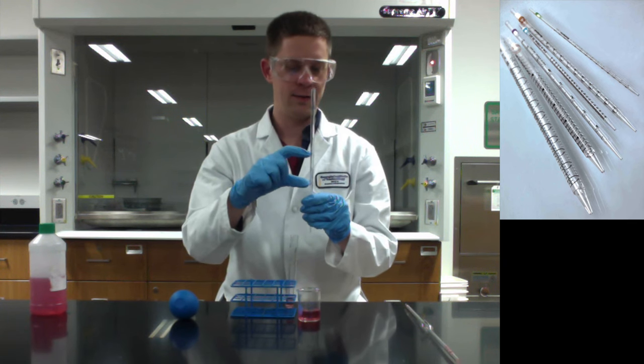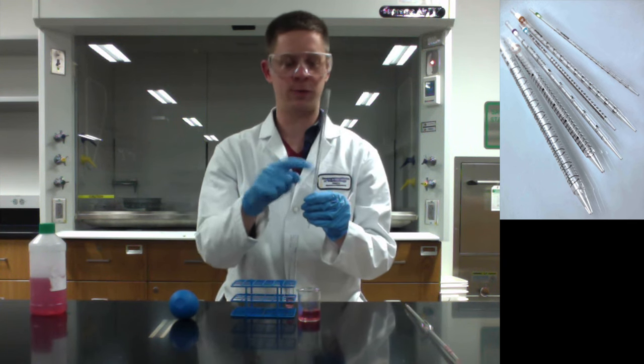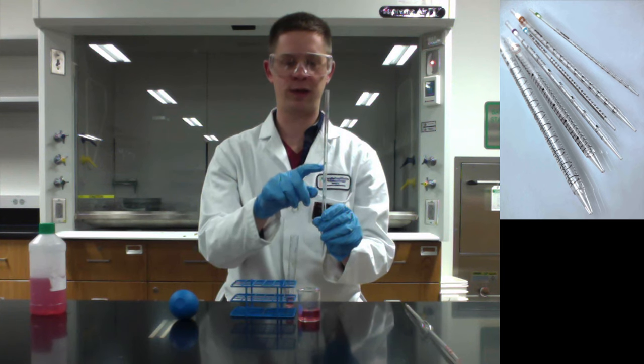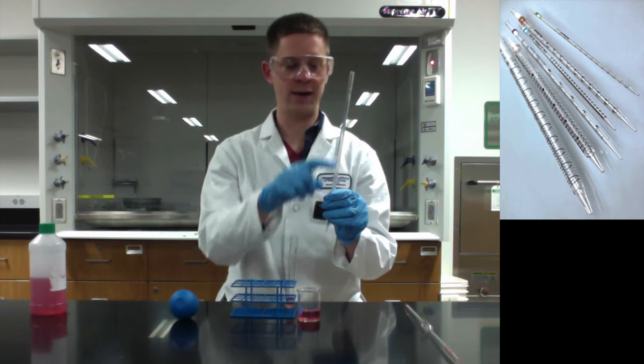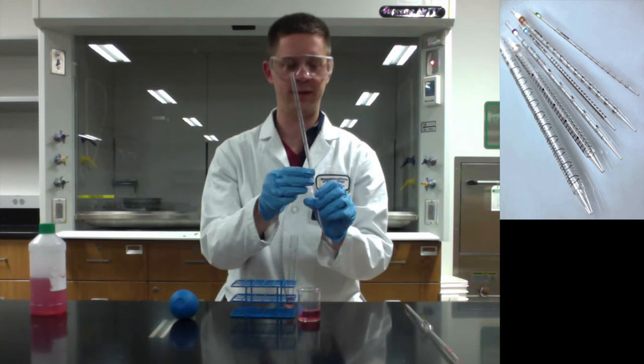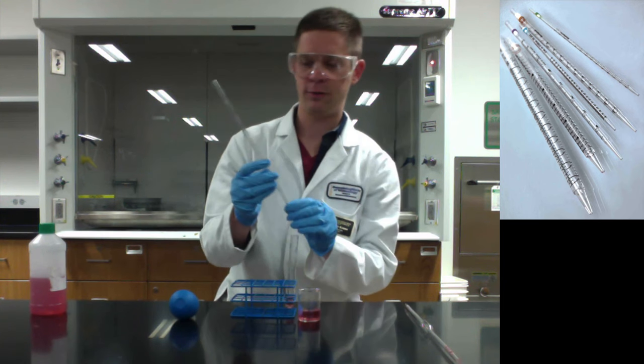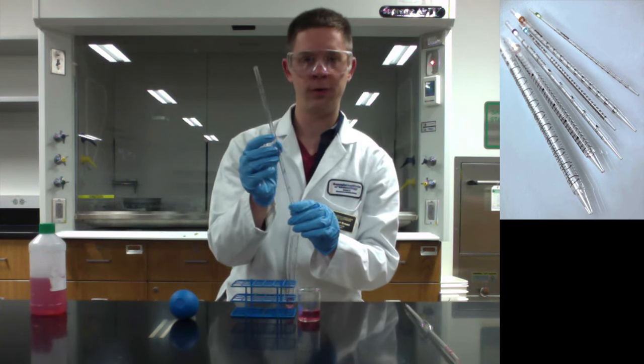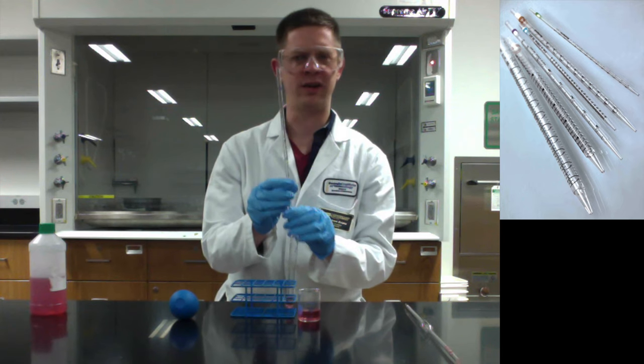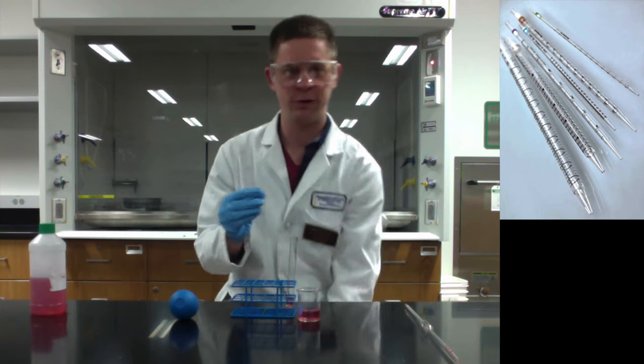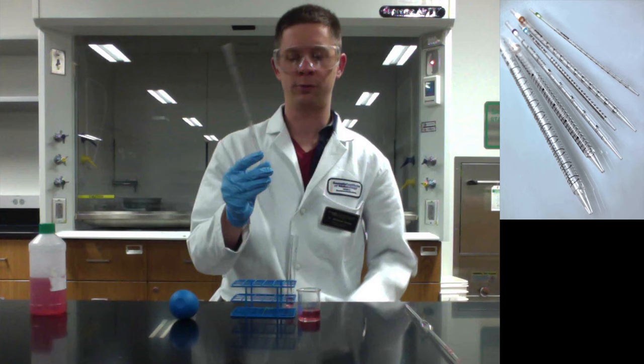This is sort of a volume measurement by difference, right? We pulled up to the zero line and then squirted out until we got down to the 2.6 line. You'll notice on many of these serological pipettes, and this one is no exception, that there are also numbers counting down from the top in a manner that you're probably a little more familiar and a little more comfortable with. And you can use these to pipette as well.